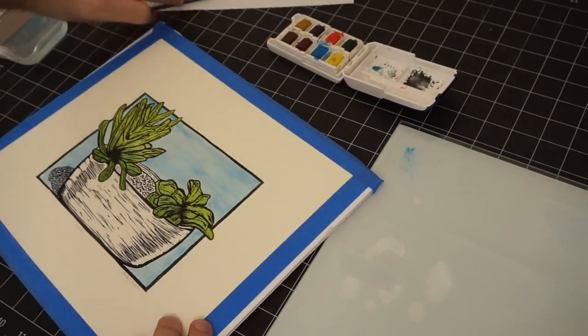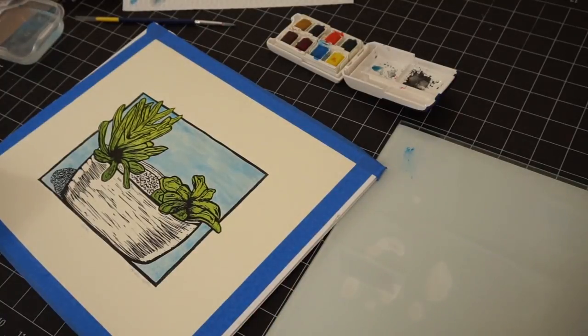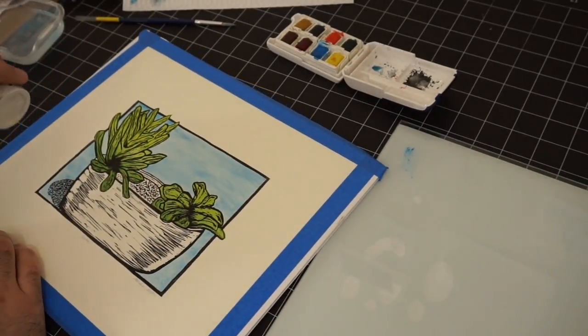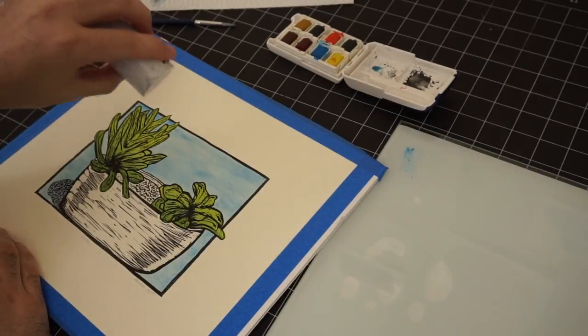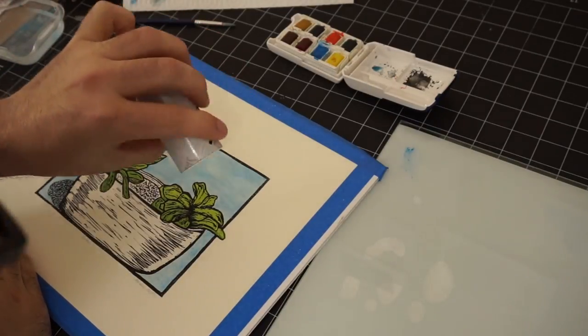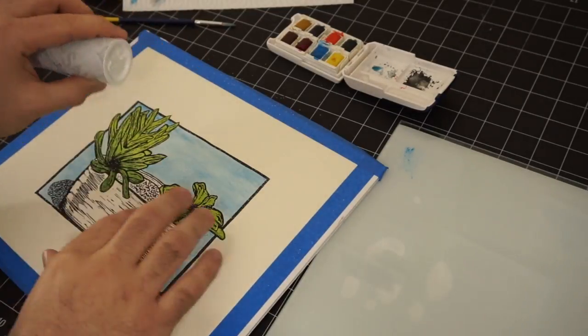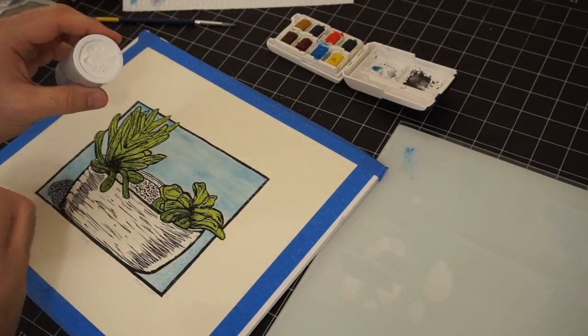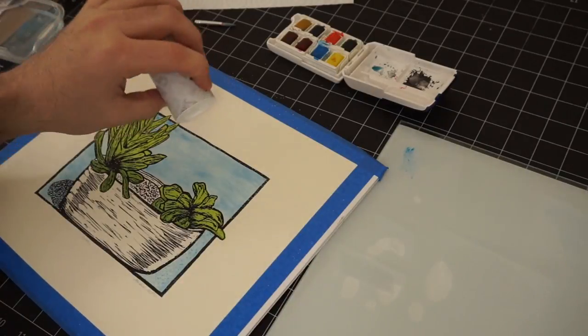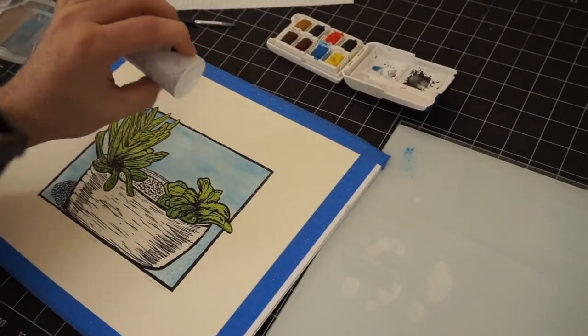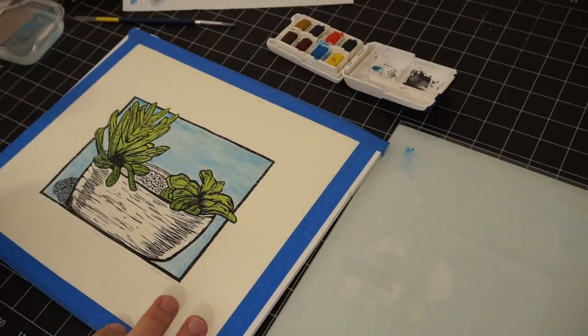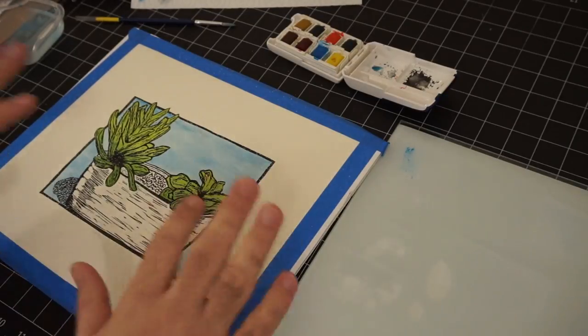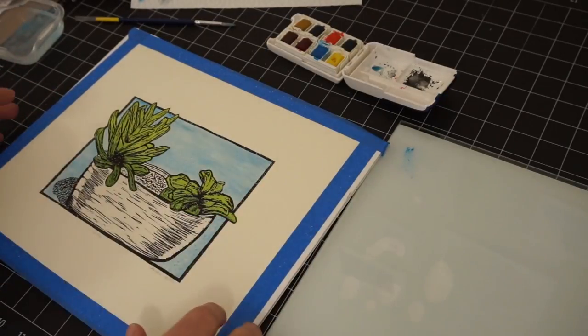All right, and before this really starts to dry I'm going to take regular salt, table salt, and put it on top of this blue. What it's going to do is it's going to kind of soak up some of the water and give it kind of a cool effect as it dries. So I'll let this layer dry and then after that we can go ahead and take all the salt off and then move on to the next layer. But while that's drying I'm going to go ahead and do the other print. Since I have two of these I'm going to try to make it look as similar as I can.